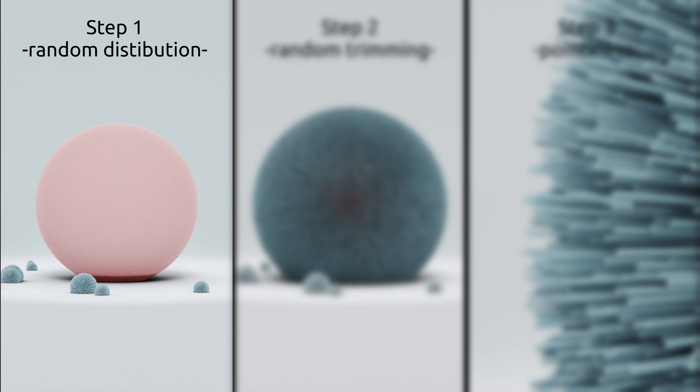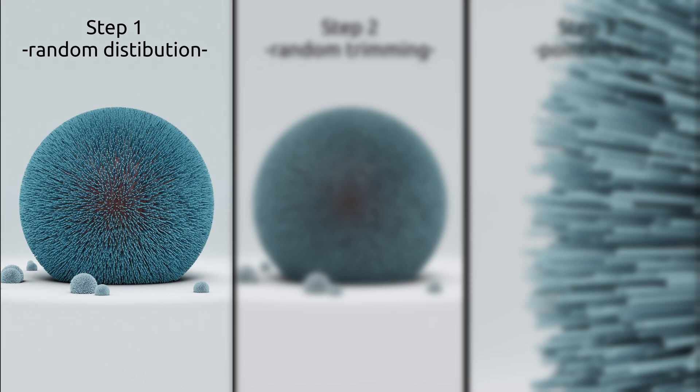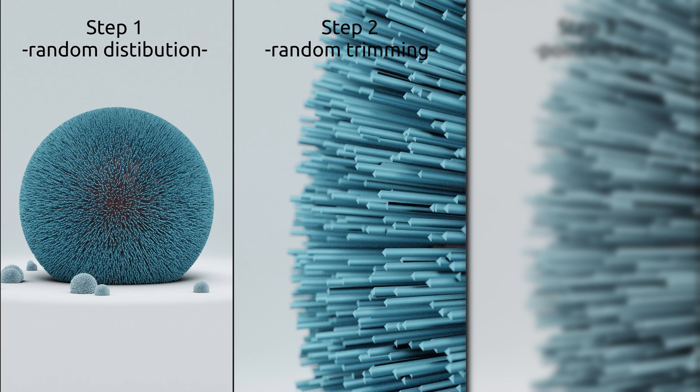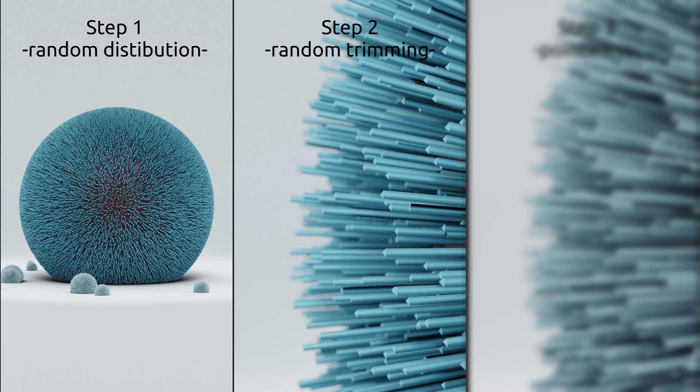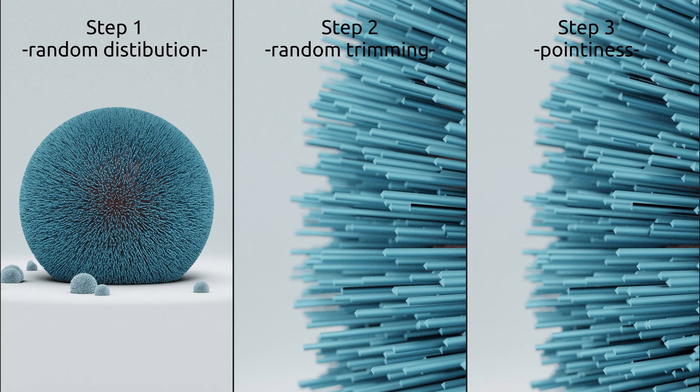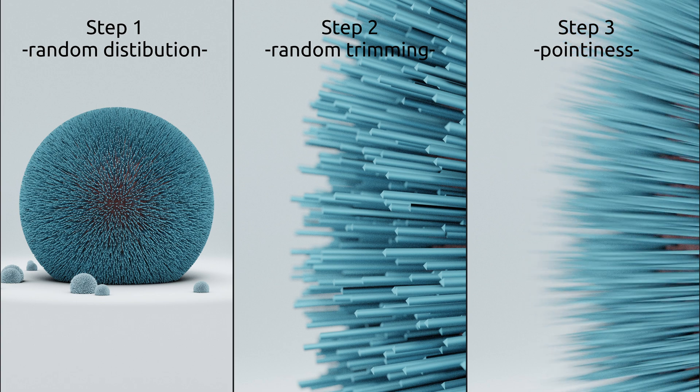In the first step, we're going to distribute strands of fuzz on an object. In the second step, we're going to trim those strands randomly so that they look more natural. And in the final step, we will make the fuzz more realistic by making the tip of the strands pointy.